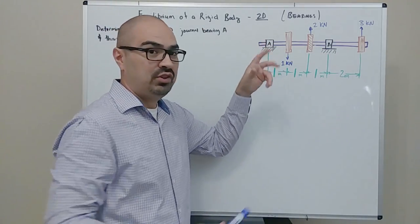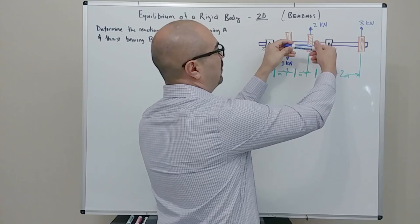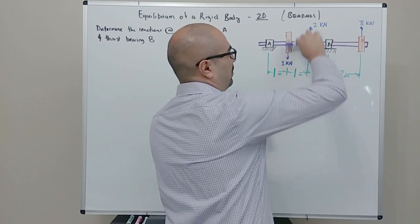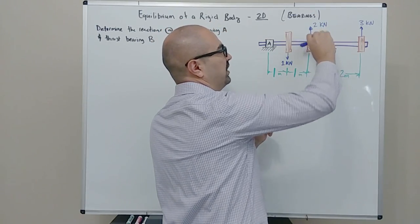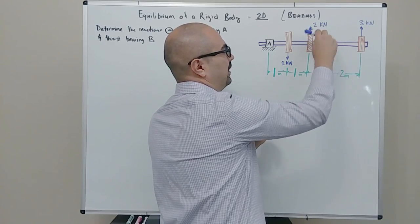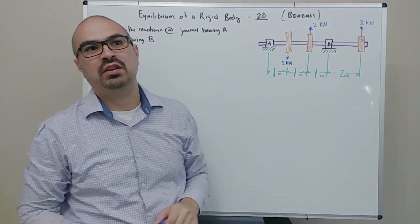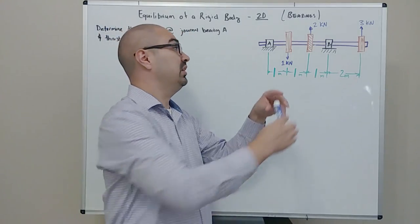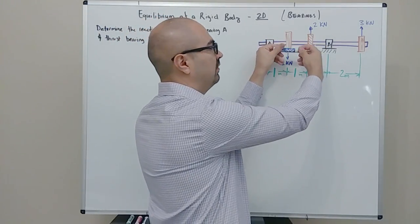Although a shaft could be spinning, as long as it's not translating in the X or Y, or rotating up and down or in and out of the plane, we can still consider it to be in static equilibrium, especially if the shaft is rotating with a constant velocity.